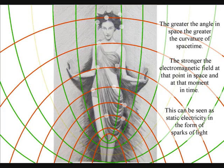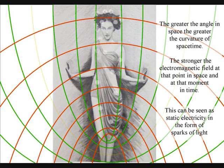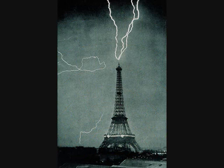This can be seen as sparks of light associated with static electricity. The atoms will even distort the geometry of space-time, creating electrostatic discharge in the form of lightning.